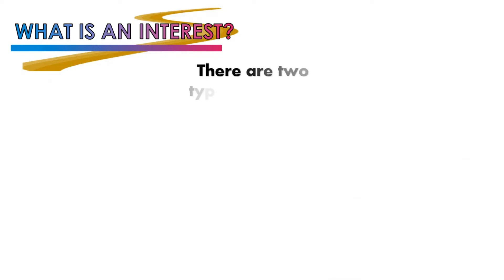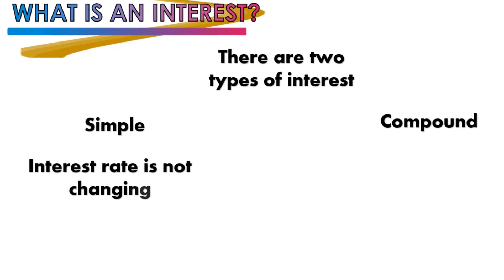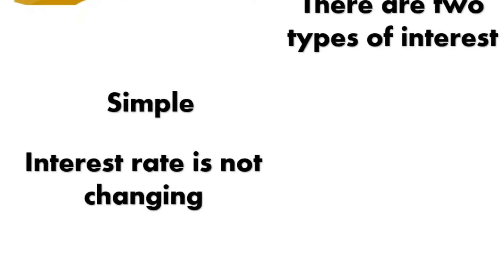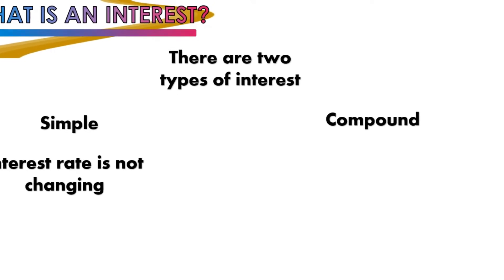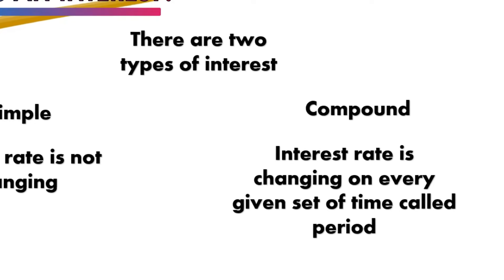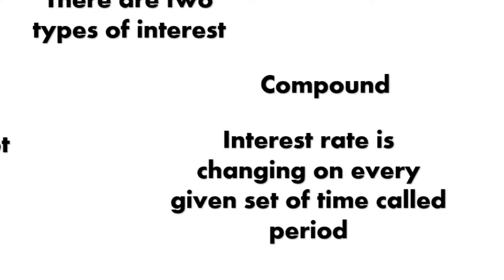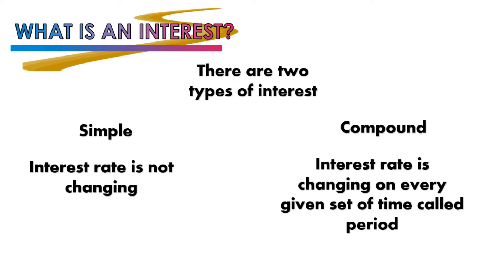There are two types of interest: simple and compound. For simple interest, the interest rate does not change — the percentage added to the borrowed amount stays constant throughout the payment period. For compound interest, the rate changes every period. A period is a set of time when the interest rate changes, such as monthly, annually, or quarterly. So in compound interest, the rate keeps increasing every period, while in simple interest the rate stays the same until the end.